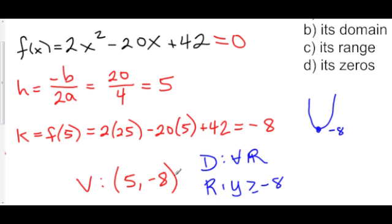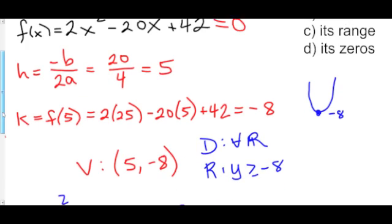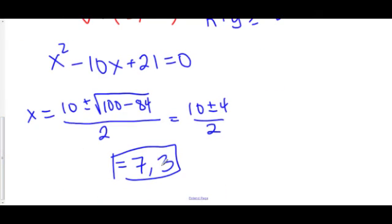And so we have our vertex, our domain, our range, our zeros. And now once again, that is the answer.